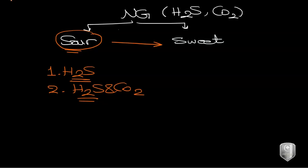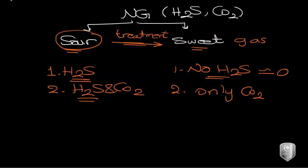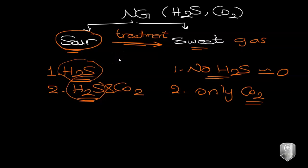After doing the treatment — the sweetening or acid gas processing — you have a sweet gas. This gas has essentially no H₂S, so the concentration of H₂S must be almost zero. However, it can still have some carbon dioxide. For a sour gas, the presence of H₂S alone is enough; but for sweet gas, you can have some traces of CO₂. The presence of carbon dioxide alone does not mean you have a sour gas.